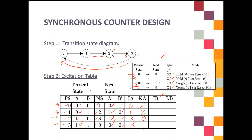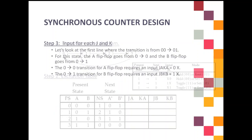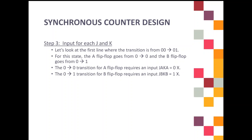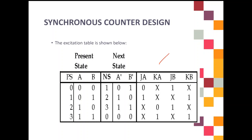For JB and KB, you compare between B present state and B next state using the same excitation table. The first row: 0 to 1 is 1X. Next: 1 to 0 is X1. Then 0 to 1 is again 1X. And 1 to 0 is X1. This is how you find the input J and K — carefully comparing between the variables. That completes the excitation table.